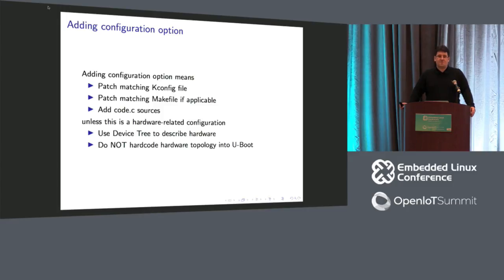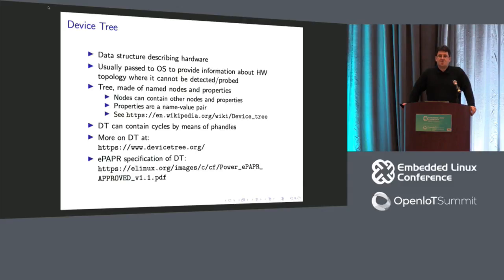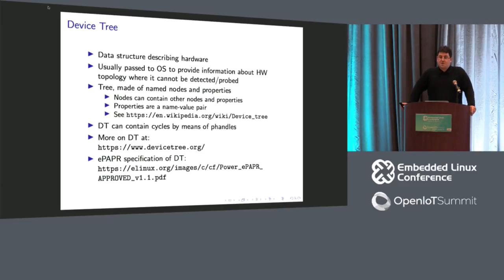If it's some sort of hardware configuration option, you should not add it into kconfig but instead add it into a device tree. A device tree is a data structure used to describe hardware to software. It's especially useful if your hardware cannot be detected — you can describe the entire hardware structure in the device tree and pass this information to software so it knows the topology of your hardware.